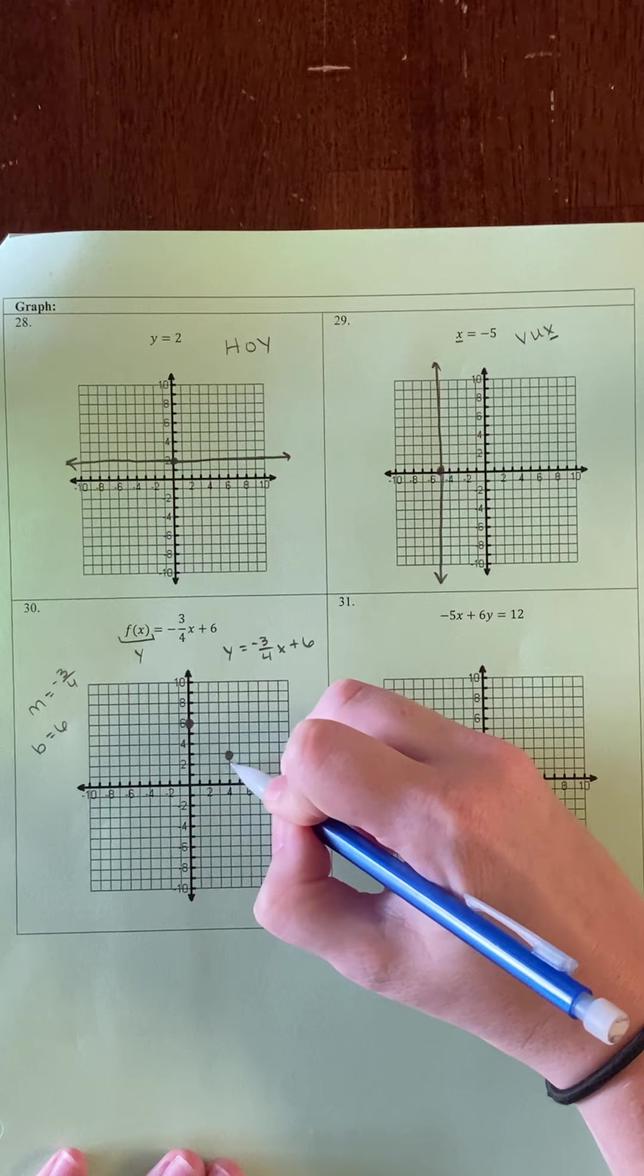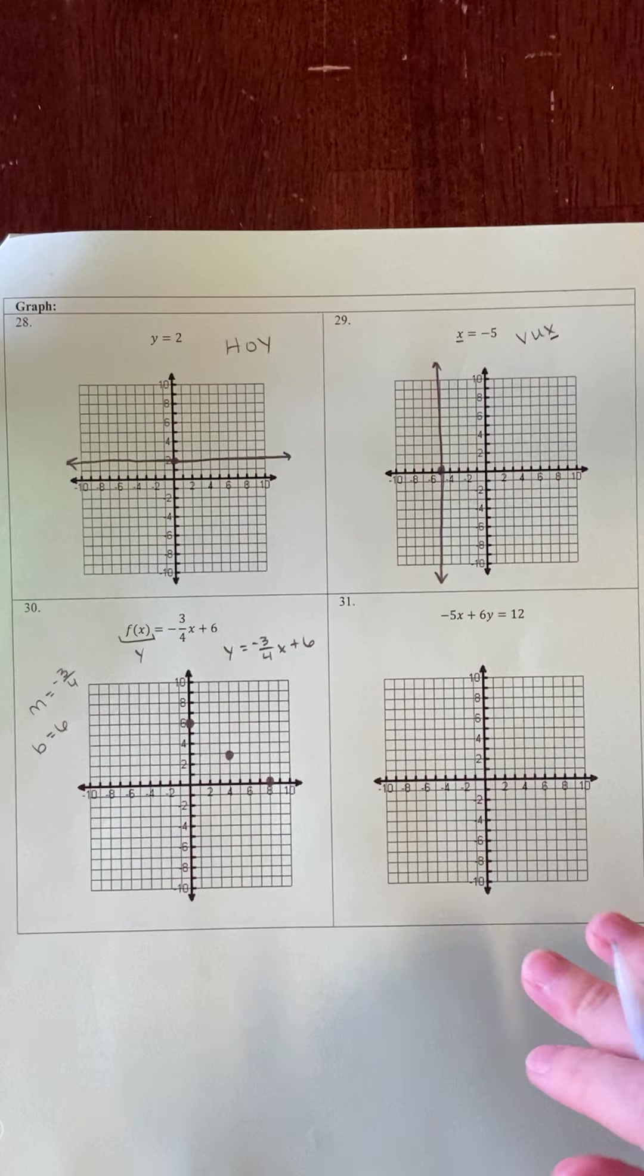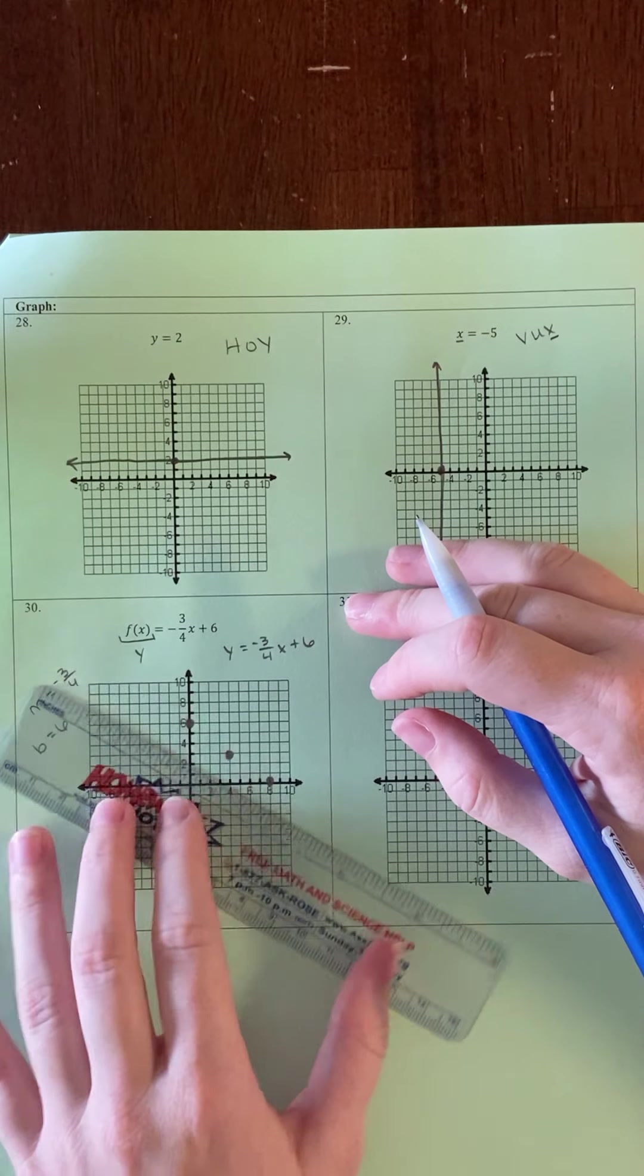And then again, I'll go down 3, right 4, and plot a point. Then I'll use my straight edge to connect those points.